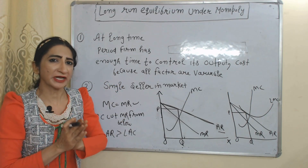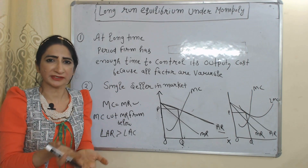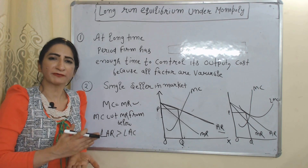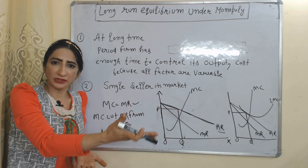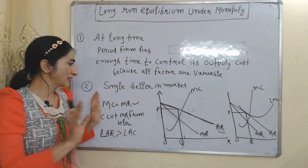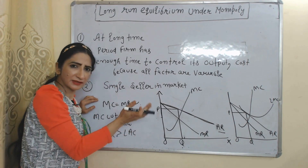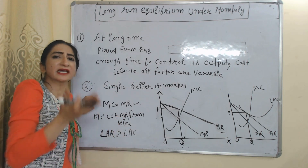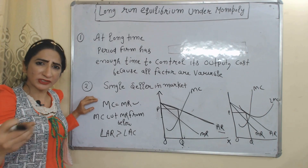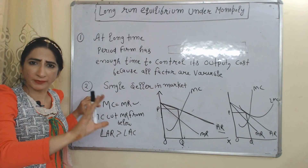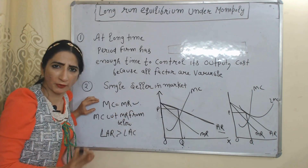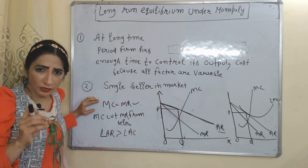Now we are going to talk about long-run equilibrium under monopoly. At the short-run, a firm can receive super normal profit, normal profit, or loss. But at the long-run, the firm has enough time to control its output and costs because all factors are variable. Also, since there is only a single seller with no close substitute, in the long run the firm will mostly receive super normal profit.